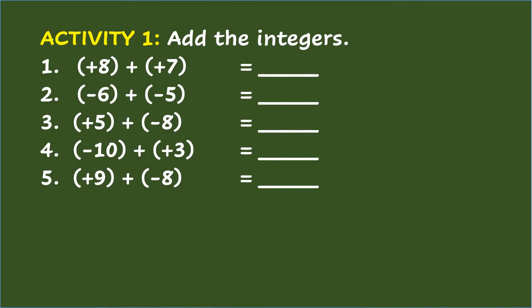Activity 1: Add the integers. Number 1: Positive 8 plus positive 7 equals blank. The answer is positive 15. Number 2: Negative 6 plus negative 5 equals blank. The answer is negative 11. Number 3: Positive 5 plus negative 8 equals blank. The answer is negative 3.